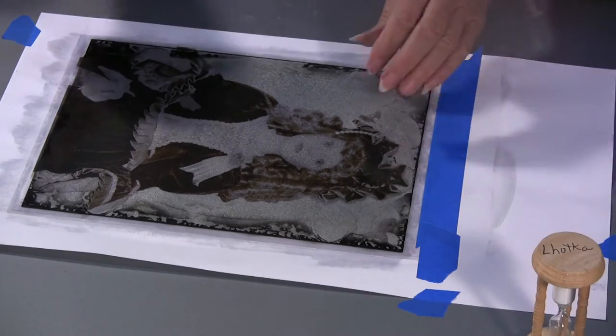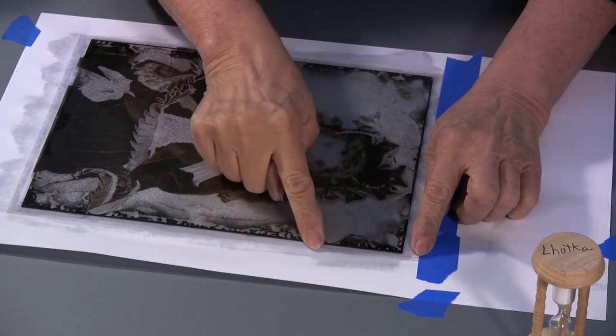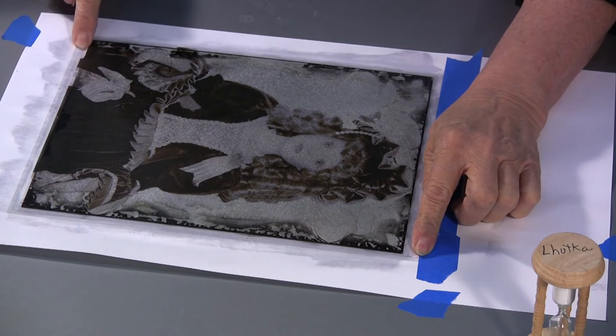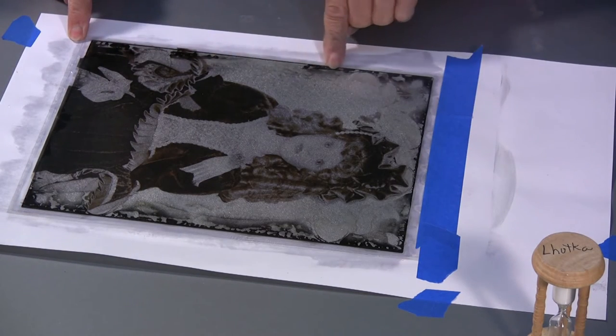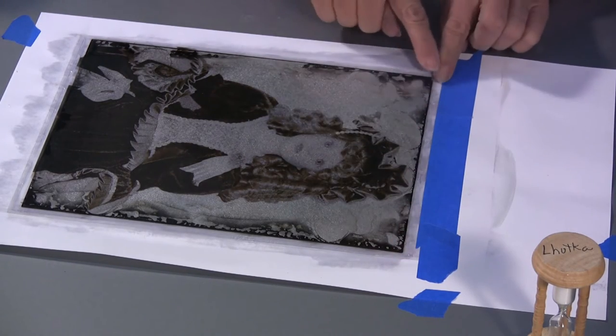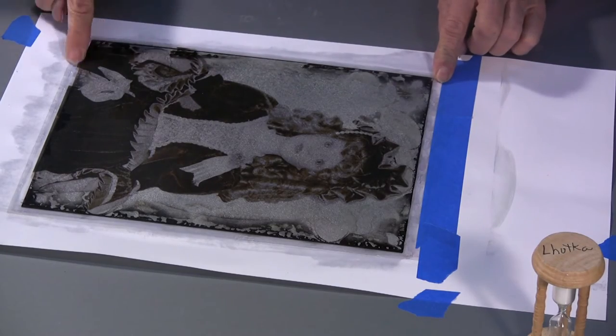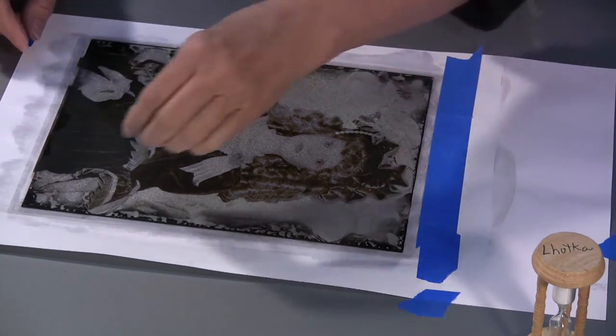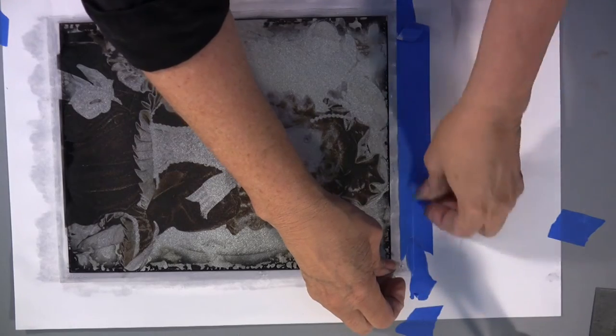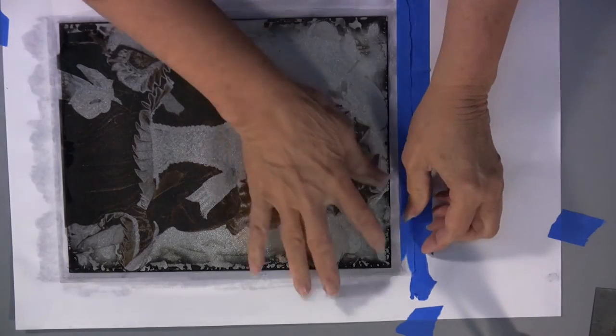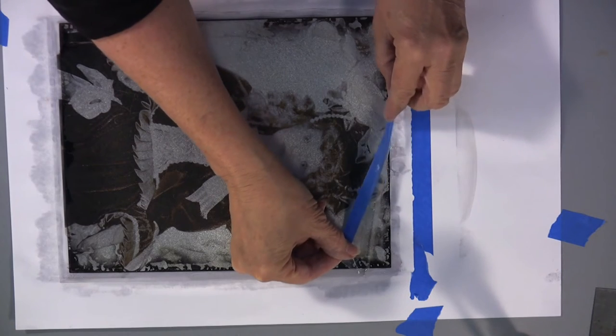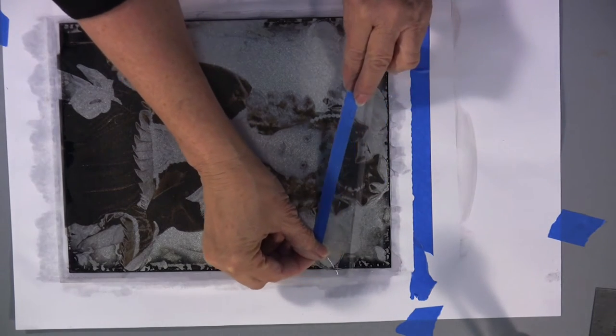Just before we remove the film, we're going to run a finger right along the edge to break the seam right along the film and the edge of the plate because some of the coating on the film now is sticking to this white paper. You'll always put this piece of absorbent paper underneath your print. Okay, we're going to start at this corner and pull this back. Keep the film as horizontal as possible.